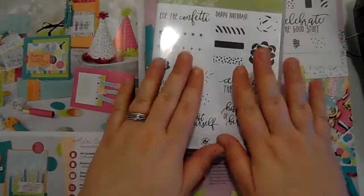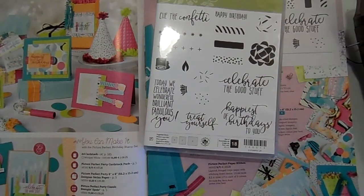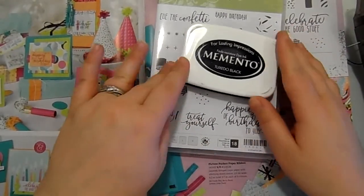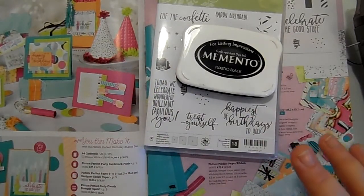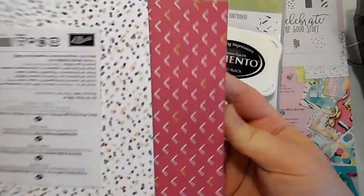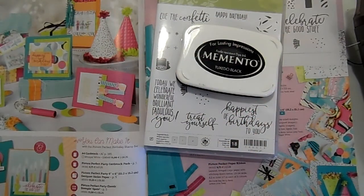Month one is your Picture Perfect birthday stamp set and the Memento Tuxedo black ink. Month two includes the Picture Perfect Party designer series paper along with the Bermuda Bay and Lemon Lime twist ink pads.